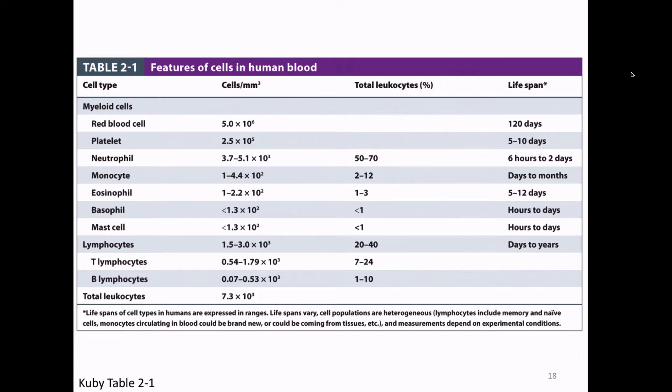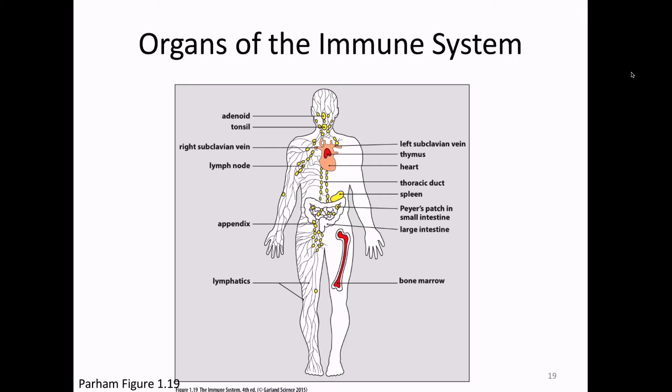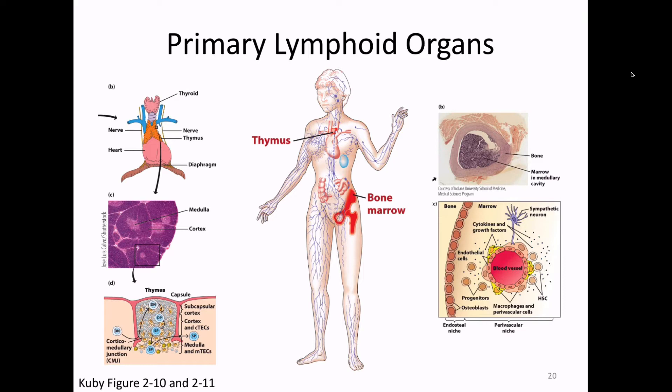The immune system also has to do with organs, so we have organs of the immune system, and just like with cells, we can divide them up into groupings. The first type of immune organ is known as a primary lymphoid organ. Primary lymphoid organs come first, and there are a total of two: your bone marrow and your thymus. The bone marrow is inside all the bones; the thymus is an organ that sits on top of the heart with two lobes.